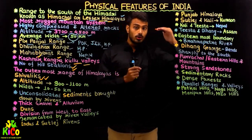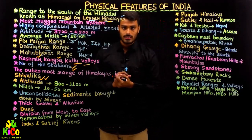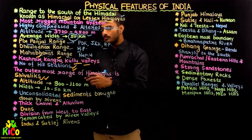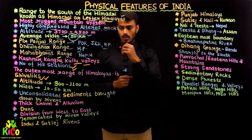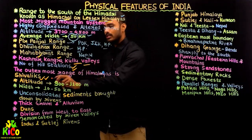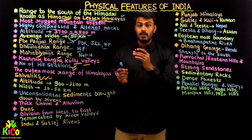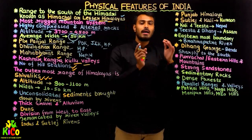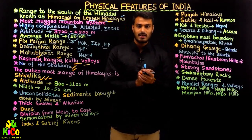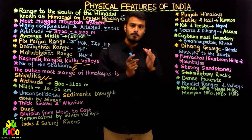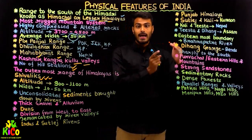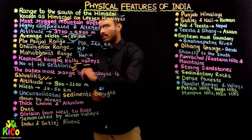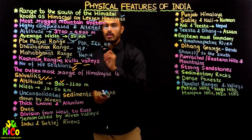The Shivalik range is basically the part which connects the northern plains and the Himalayan mountain ranges. In terms of altitude, the average height ranges from 900 to 1,100 meters — quite low compared to the Lesser Himalayas and Greater Himalayas.